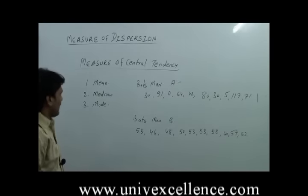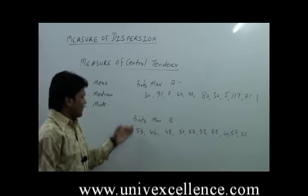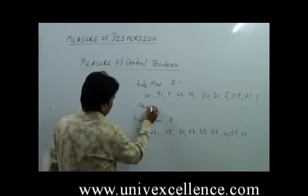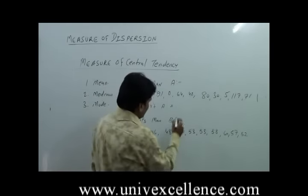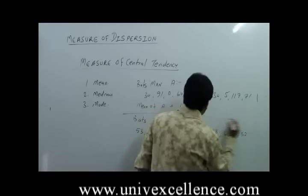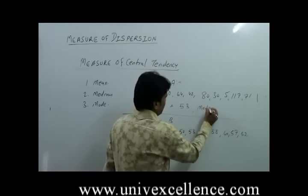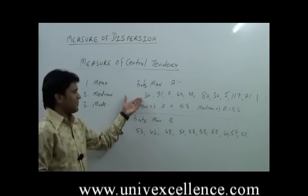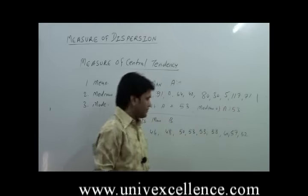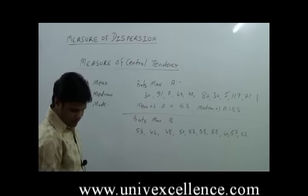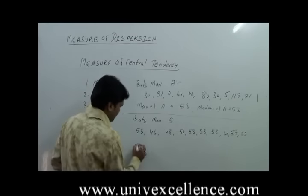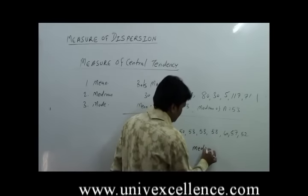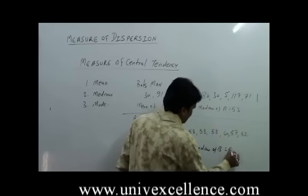Now if we look at the data and want to find out the mean and median of Batsman A and Batsman B, then we came to know that the mean of A is 53 and the median of A is again 53. If you calculate, the mean of Batsman B is again 53 and the median of Batsman B is again 53.